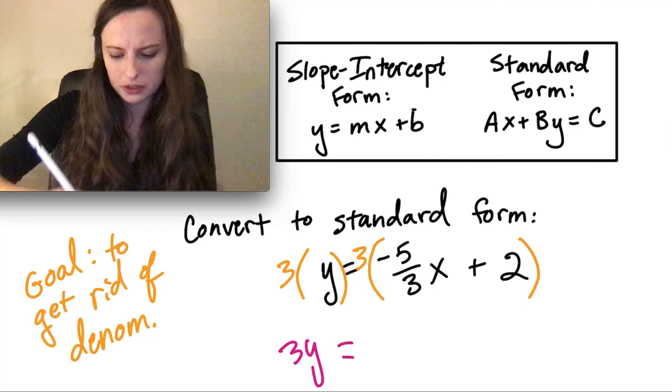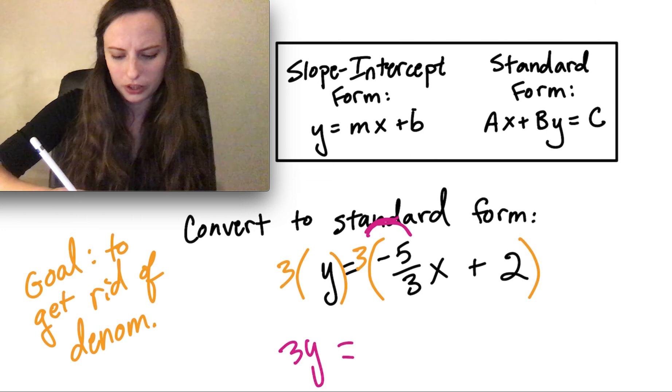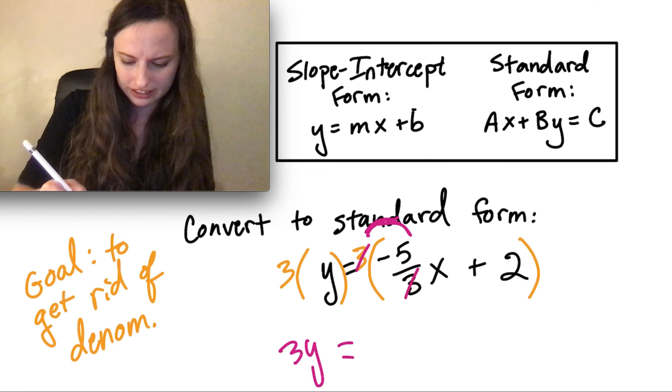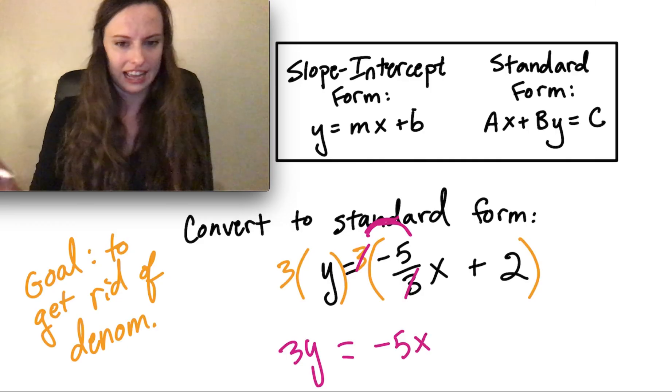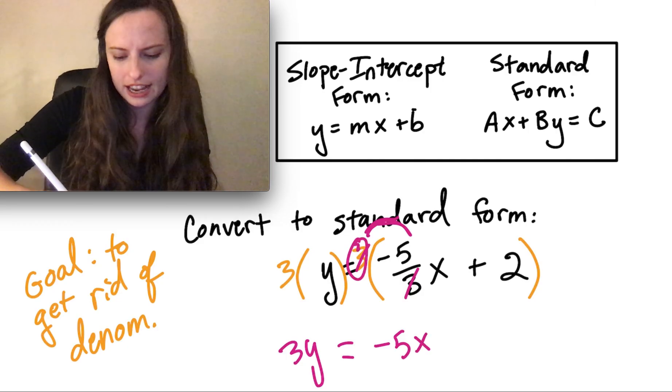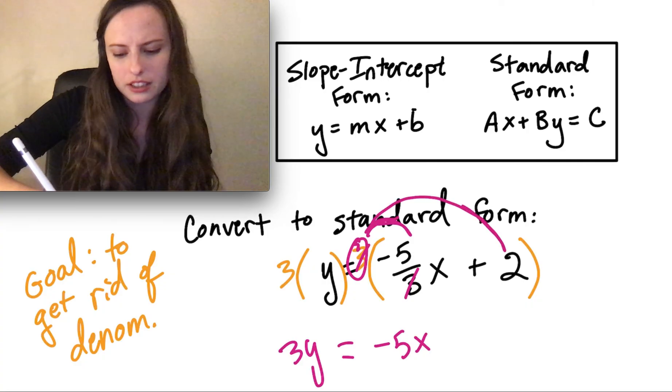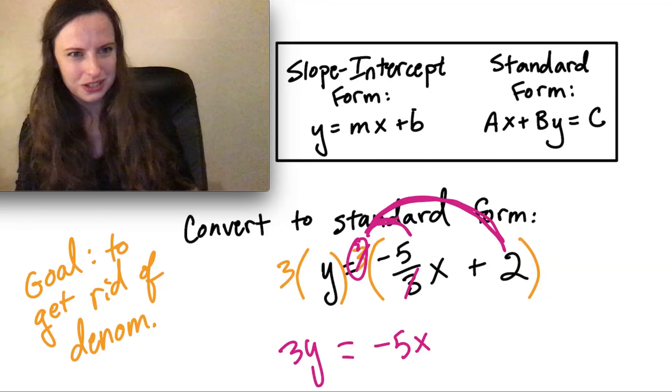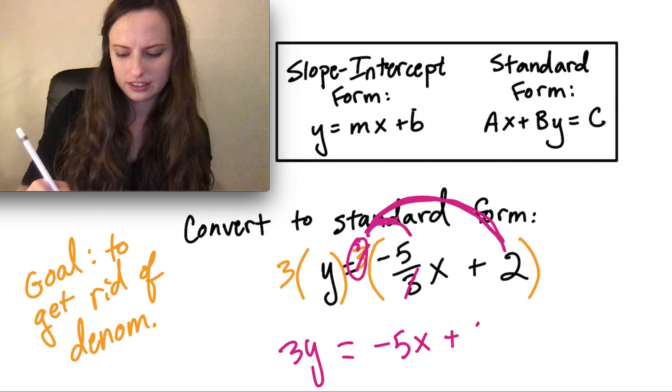We've got to distribute it first to the first term, where the 3s will cancel, leaving us, in this case, with just that negative 5x. But then again, we have to take that same 3 and distribute it to that 2. So we have 3 times 2, which gives us plus 6.